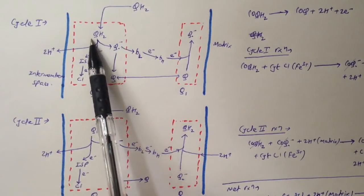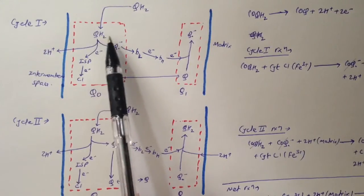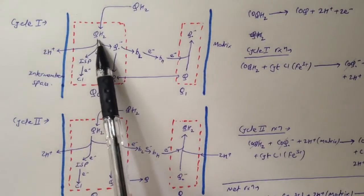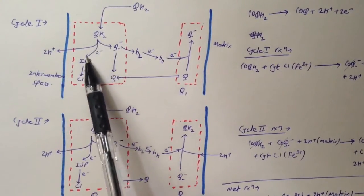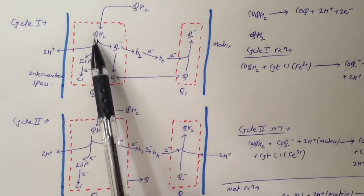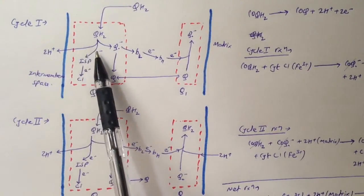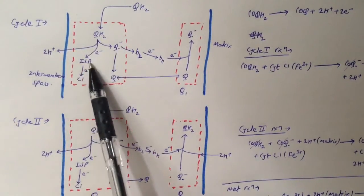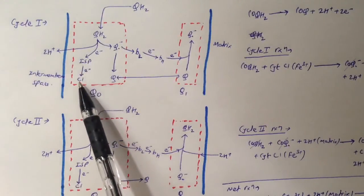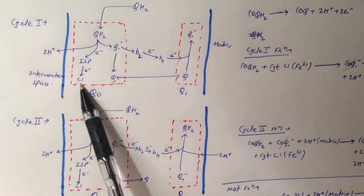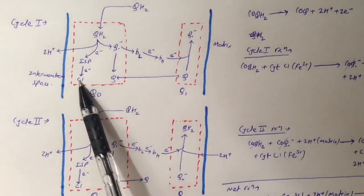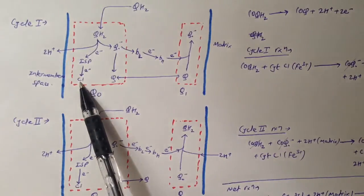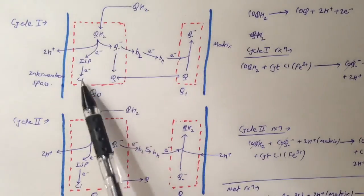Coenzyme QH₂ first binds to the Q0 site of complex 3. When it binds, it gives 2 hydrogens to the intermembrane space and gives one of its electrons to ISP (iron-sulfur protein). When it gives away 2 hydrogens and 1 electron, it becomes Q•⁻. ISP gives the electron it received to cytochrome c1, which is a site in complex 3, and cytochrome c1 gives its electron to cytochrome C.